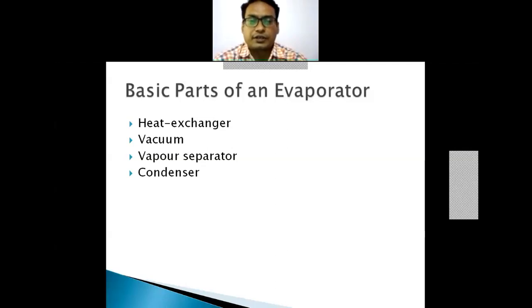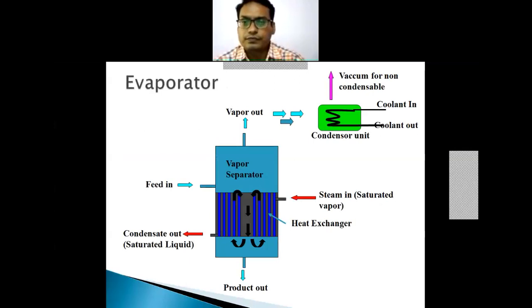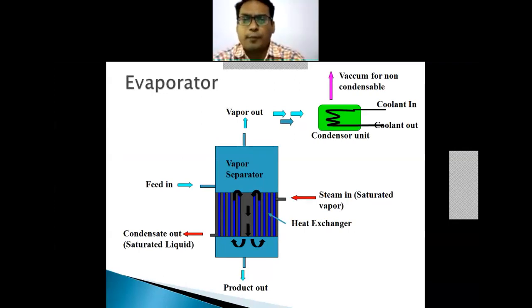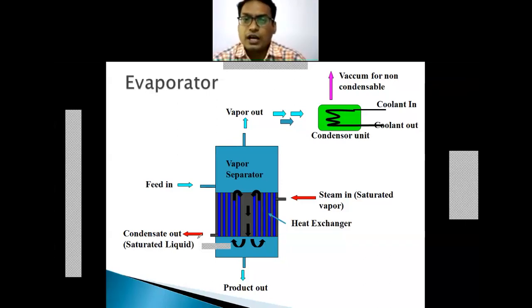The vapor separator is used to separate vapors and liquid. Whenever vacuum is applied, a condenser is required to condense the vapors. Generally, if you draw a diagram for the evaporator, it is a calendria or a short tube evaporator, because they are the most common. We will first understand what happens in the process of evaporation.